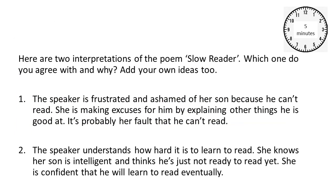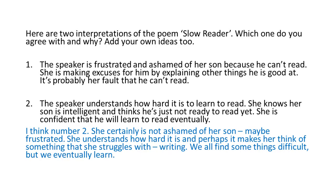Here are two interpretations of the poem Slow Reader. Which one do you agree with and why? Add your own ideas too. Interpretation 1: The speaker is frustrated and ashamed of her son because he can't read. She is making excuses for him by explaining other things he is good at — it's probably her fault he can't read. Interpretation 2: The speaker understands how hard it is to learn to read. She knows her son is intelligent and thinks he's just not ready to read yet, and is confident he'll learn eventually. Pause the video for five minutes. I think number two — she is certainly not ashamed of her son, though she may be frustrated. She understands how hard it is, and perhaps it makes her think of something she has struggled with: writing. We all find some things difficult, but we learn eventually.